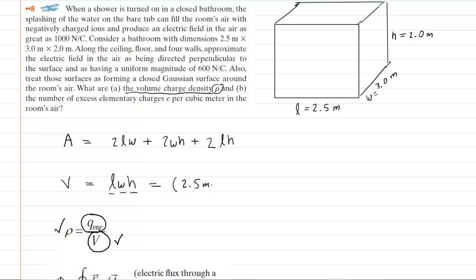So we'll go ahead and take the length of the bathroom, multiply it by the width, and then multiply that by the height. And when we do that, we can see that the volume is equal to 15 meters cubed. So that part of the problem is easy. We have the volume.